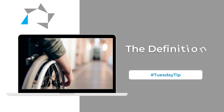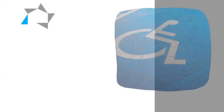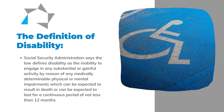HUD uses Social Security's definition of disability for their programs. Social Security's definition of disability says the law defines disability as the inability to engage in any substantial gainful activity by reason of any medically determinable physical or mental impairments which can be expected to result in death or which has lasted or can be expected to last for a continuous period of not less than 12 months.